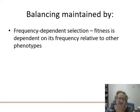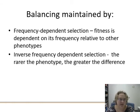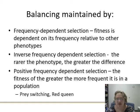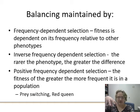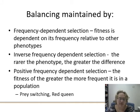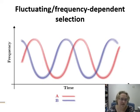Balancing selection is maintained by frequency-dependent selection, where the fitness of a particular morph depends on its frequency relative to other phenotypes. In negative frequency-dependent selection, the rarer the phenotype, the greater its fitness advantage. In positive frequency-dependent selection, fitness is greater the more common a phenotype is — like prey switching, where predators focus on the most common prey type. As gray rabbits become very common, lynxes learn to target them; then the brown rabbits increase in frequency and become the target, cycling back and forth — this is also related to the Red Queen hypothesis in host-pathogen interactions.